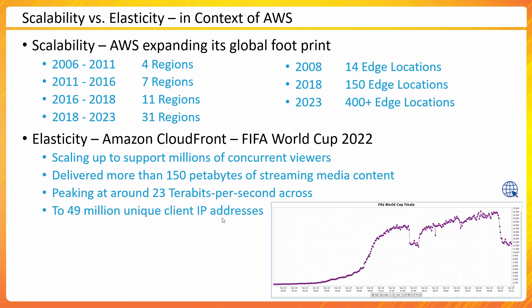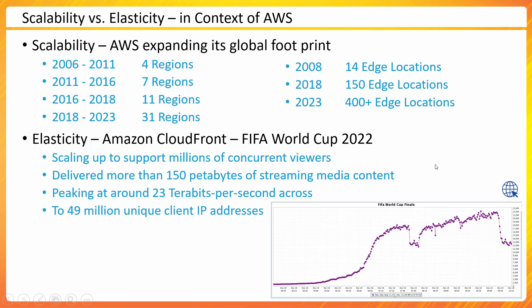Now, is that infrastructure currently at the same utilization? The answer is no. When the requirement was there, it expanded elastically, and when the requirement was not there, it shrank itself. That is what we mean by elasticity — increasing capacity based on business demand and shrinking again when that much capacity is not needed. This is an informal introduction to scalability and elasticity.